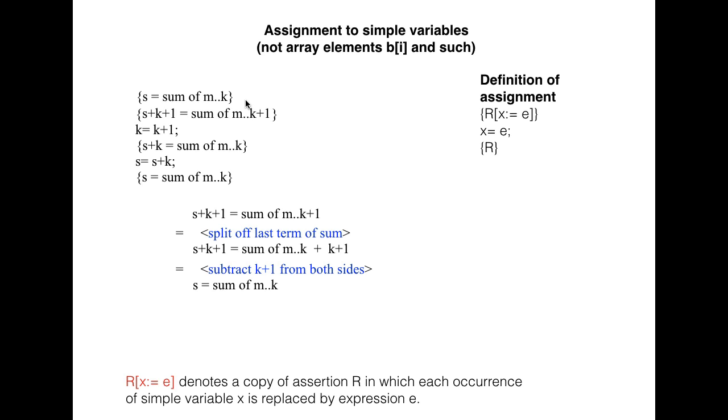So the precondition is s equal sum of m dot dot k. And we see that the assignments, k become k plus 1, s become s plus k, leave the assertion s equal sum of m dot dot k true, while increasing k by 1.